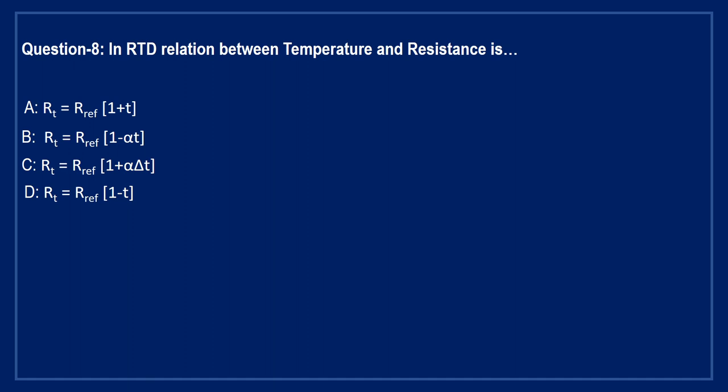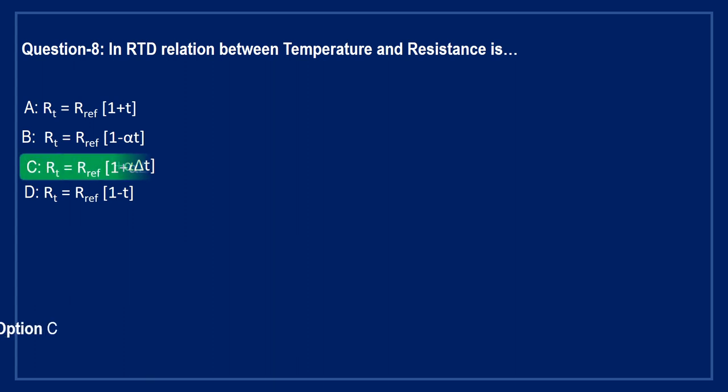Next question: in RTD, the relation between temperature and resistance is — Option A: RT = (1 + T) × R_ref. Option B: RT = (1 − T) × R_ref. Option C: RT = (1 + α·ΔT) × R_ref. Option D: RT = (1 − T) × R_ref. The correct answer is Option C: RT = (1 + α·ΔT) × R_ref.